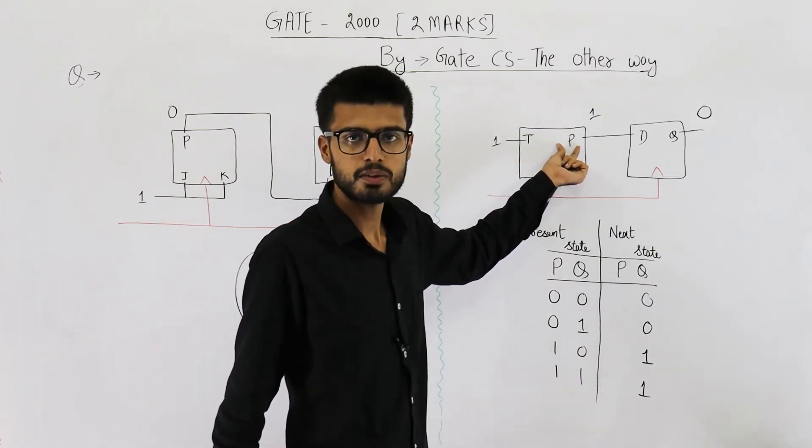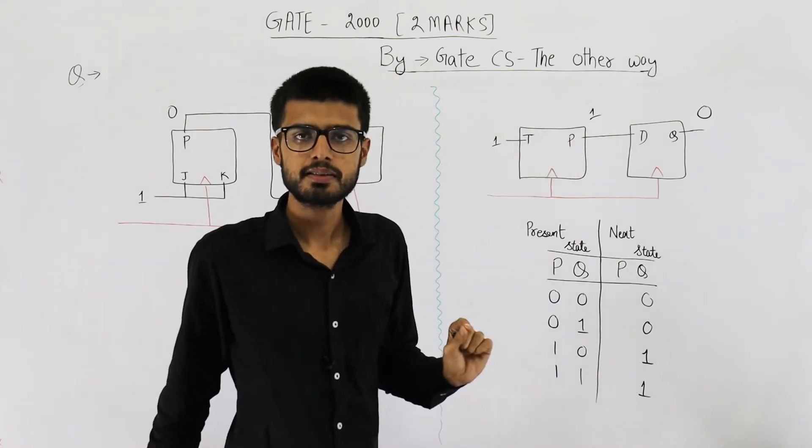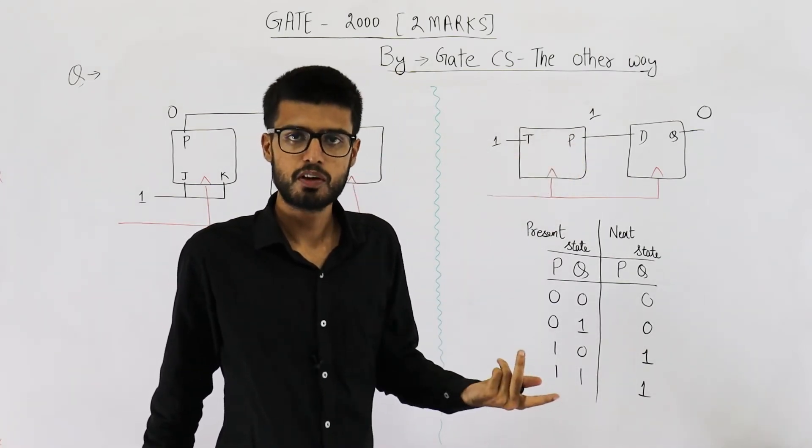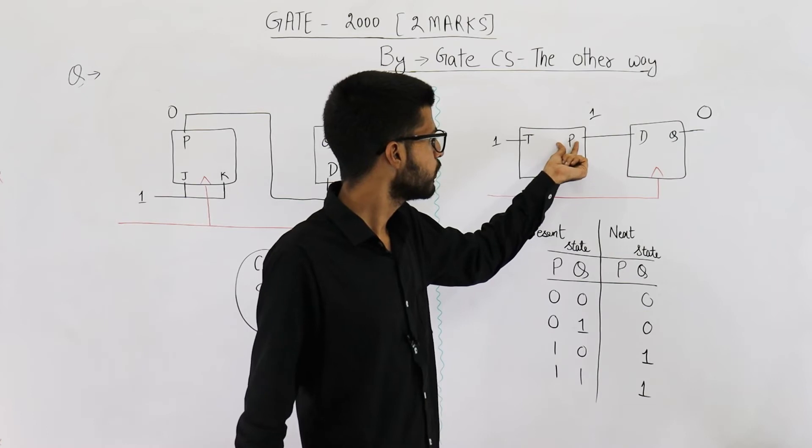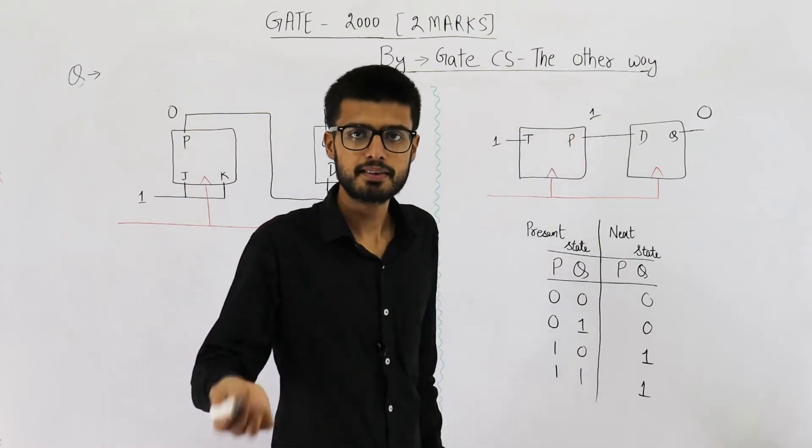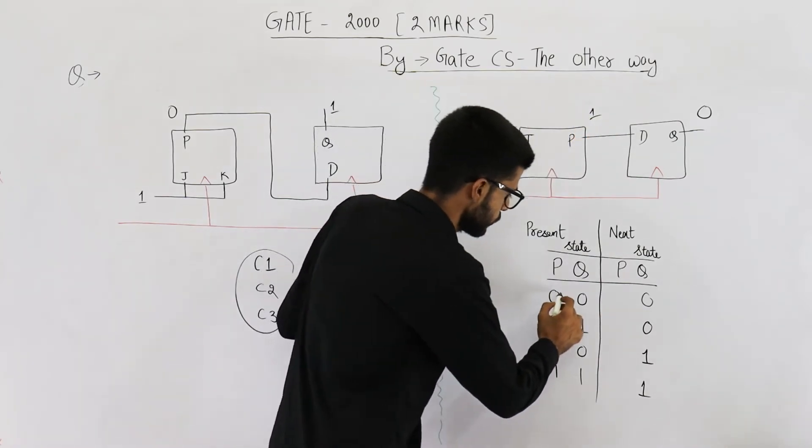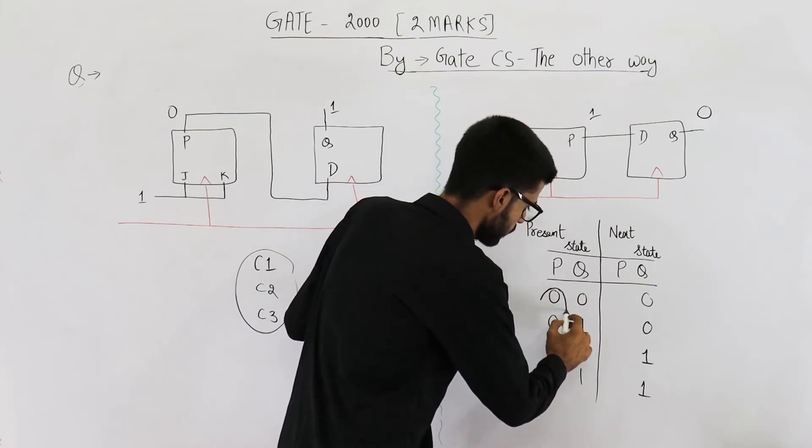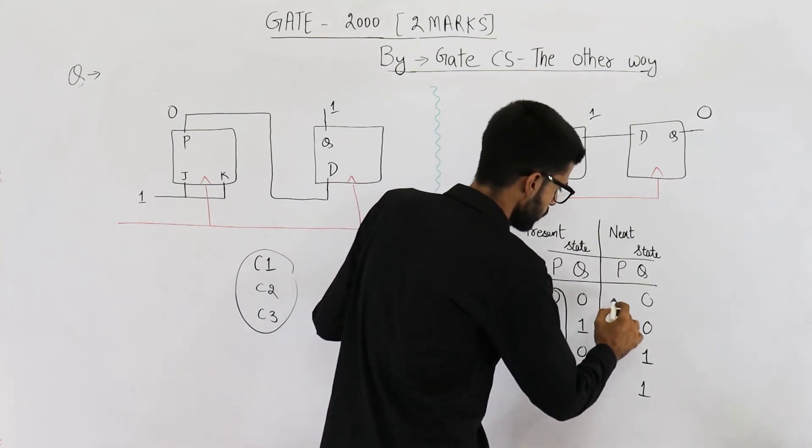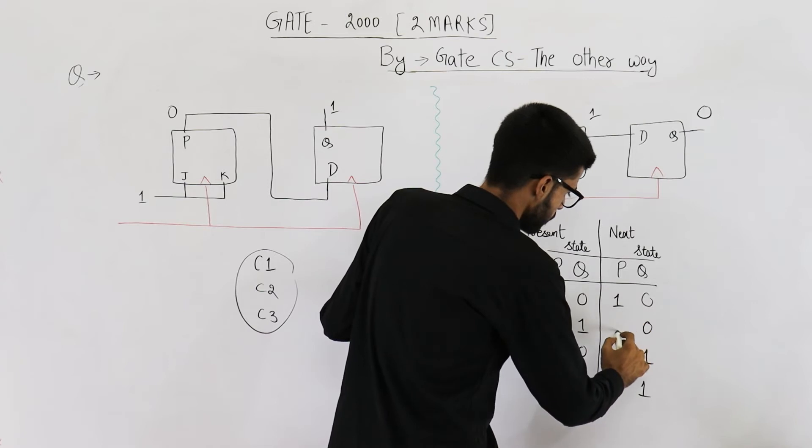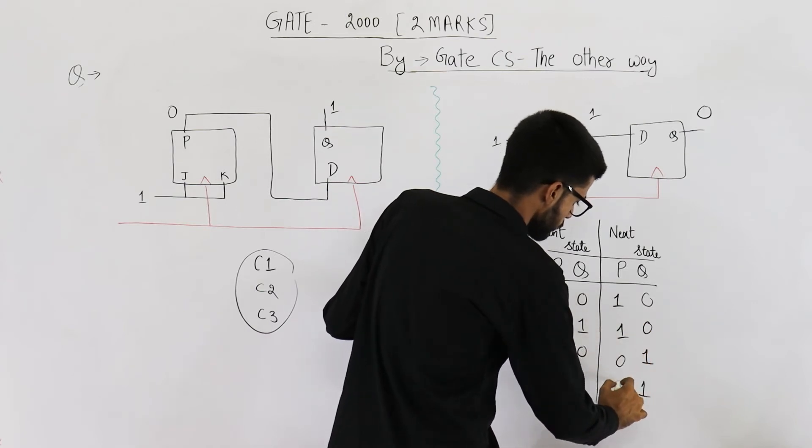And upon seeing a clock signal whatever is the value of P will be toggled. If current value of P is one the next value of P the next state will be zero. So just take complement of this column. It will be one one zero zero.